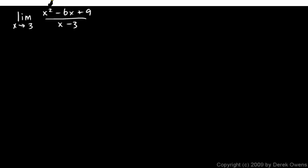This evaluates to 0 over 0. If x approaches 3, clearly the denominator is 0. And the numerator is 9 - 18 + 9, which is also 0.